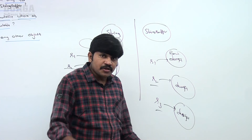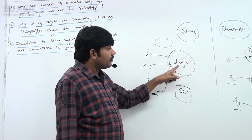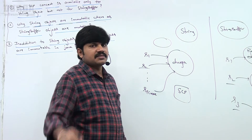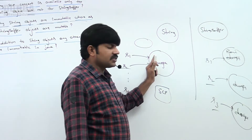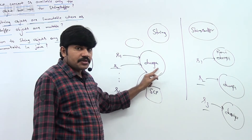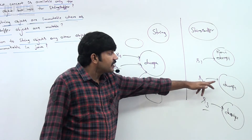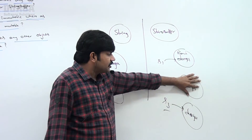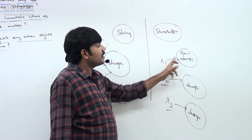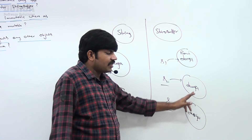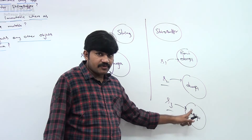So, reusing the same object is not there in StringBuffer, therefore immutability is not required for StringBuffer. To summarize: for string objects, SCP concept is available, same object is reused, multiple references point to the same object — so immutability is compulsorily required. But for StringBuffer, SCP concept is not there, every reference has a separate object, so immutability is not required for StringBuffer.